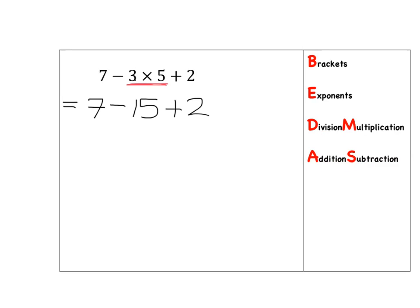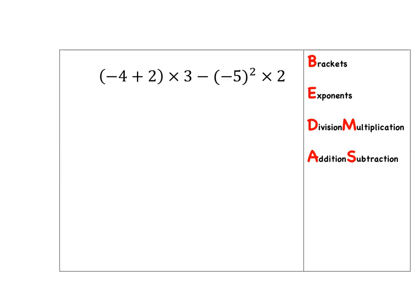Addition and subtraction are at the same level, so there's nothing that tells me which of those two needs to go first — I just move from left to right. Seven subtract 15: I'm at 7, I go 15 back, I end up at negative 8. Then negative 8 plus 2: I'm at negative 8 and I come two steps further up, ending at negative 6. That's my answer.